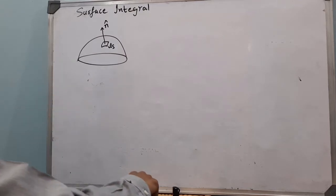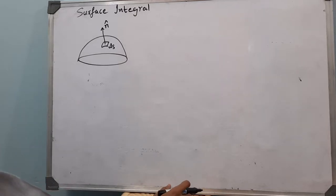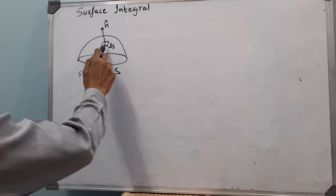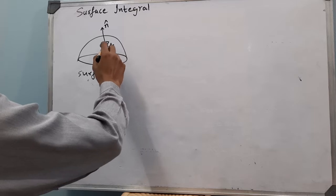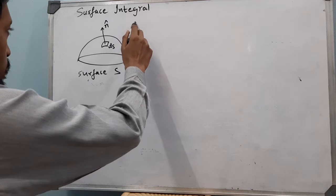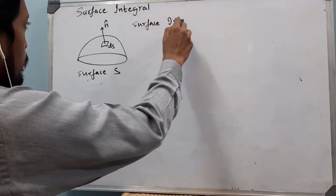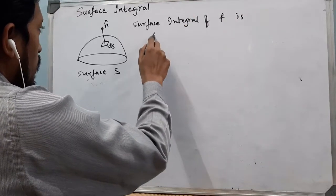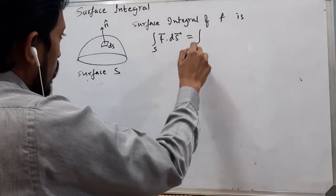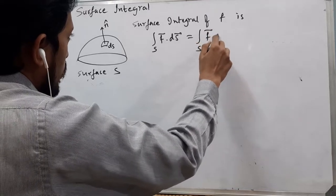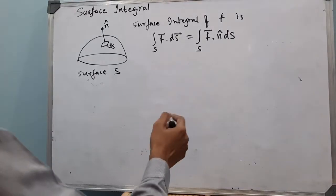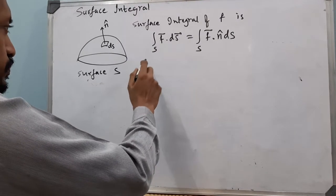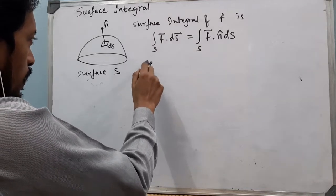In this video I will be discussing the surface integral. If we consider a surface S, a small surface area dS, and a unit outward normal n̂, then a surface integral of F is denoted as ∫∫_S F·dS, or alternatively as ∫∫_S F·n̂ dS. The vector n̂ is the outward unit normal to the surface element dS.